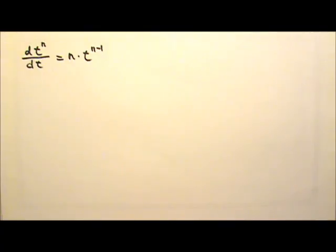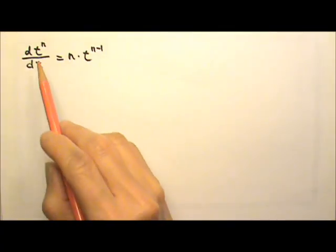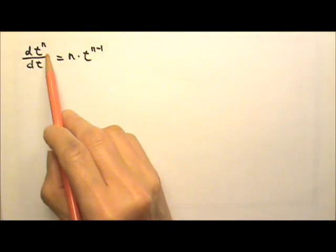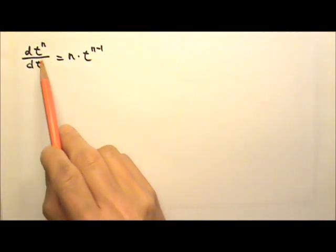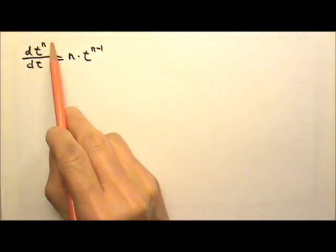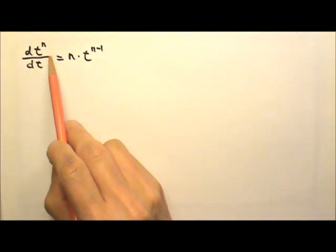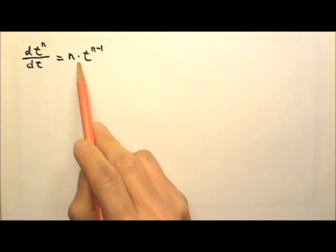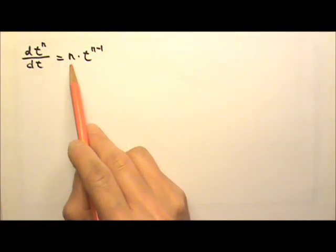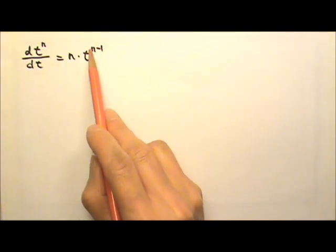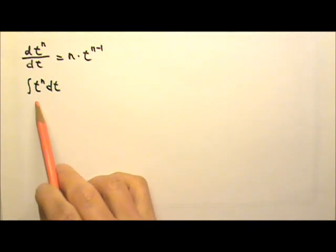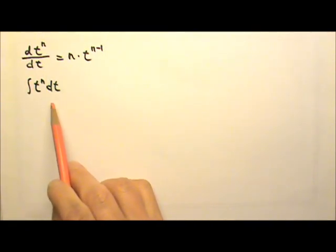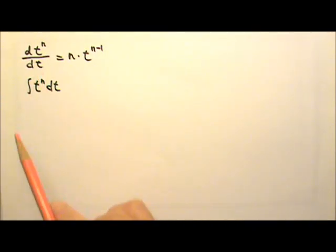We have learned that to take the derivative of a polynomial, we can use this formula. When we take the derivative of t to the nth degree, we bring the exponent down and we lose one degree of power. In this lesson, we're going to talk about integration, which is the reverse operation of taking a derivative.